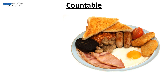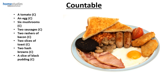Here is a picture of a traditional English breakfast. It's very tasty but unhealthy. On the plate we have a tomato — countable; an egg — countable; six mushrooms — countable; two sausages — countable; two rashers of bacon — countable; two slices of toast — countable; two hash browns — countable; and a slice of black pudding — countable. However we also have some beans. We would say 'some' because we do not sit and count every single bean on the plate. So here beans are uncountable.